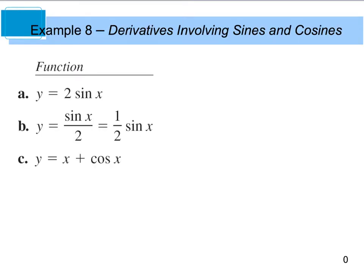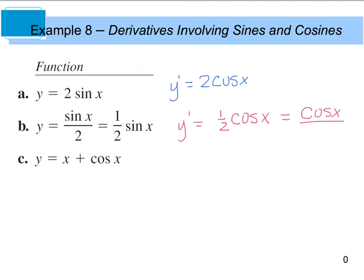Looking at Example 8, for part a, the function y = 2sin(x): the derivative y' = 2cos(x). For part b, we have sin(x)/2, which you could rewrite as (1/2)sin(x) — it might make it easier. The derivative of this is (1/2) times the derivative of sine, which is cos(x), so the final answer is (1/2)cos(x), or cos(x)/2.